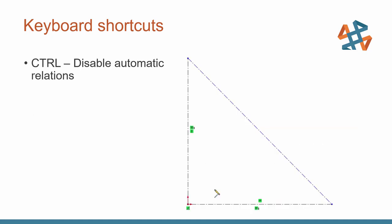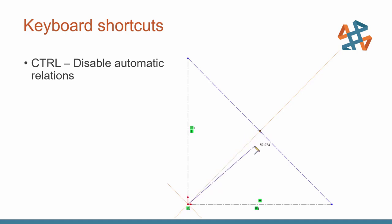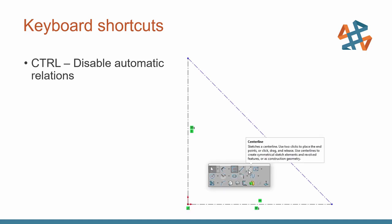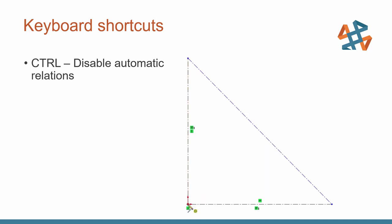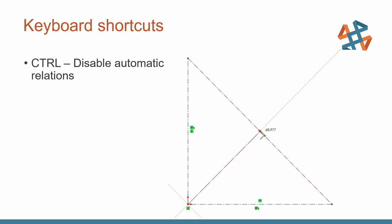Another great hot key is holding down the Control key to disable automatic relations. You can see the default functionality — those relations pop up — but hold down Control and it shuts them off. Let go and those yellow relation icons come back on. This works really well in situations where you need to create two entities very close together yet SolidWorks always wants to add an automatic relation. Control shuts it off temporarily so you can place that geometry wherever you need.